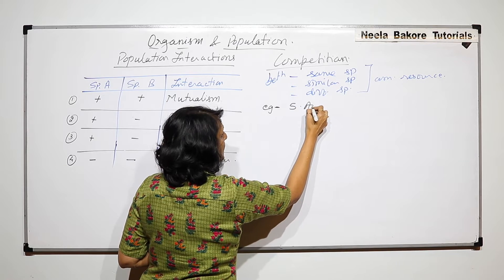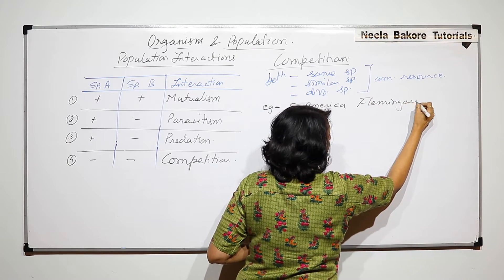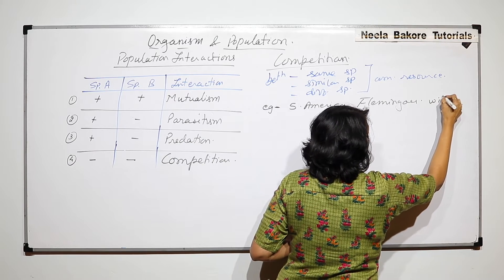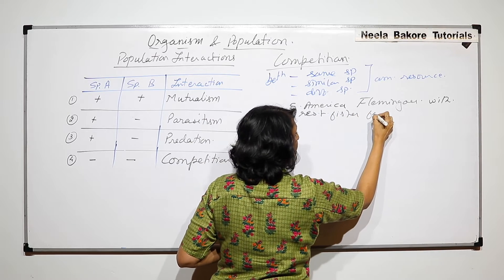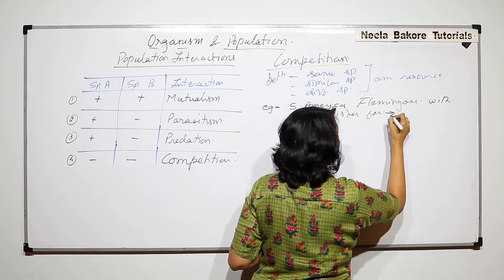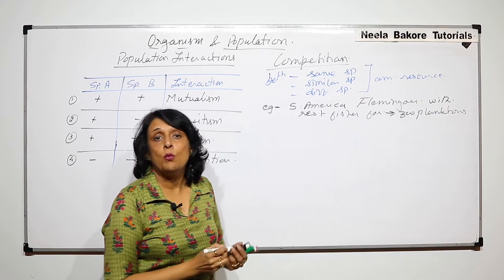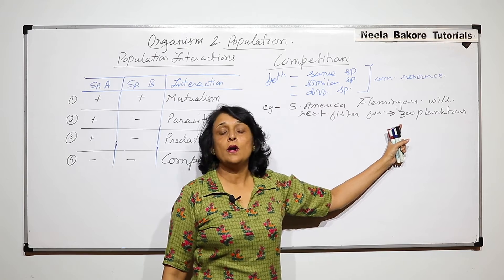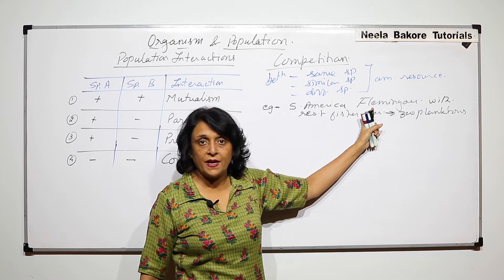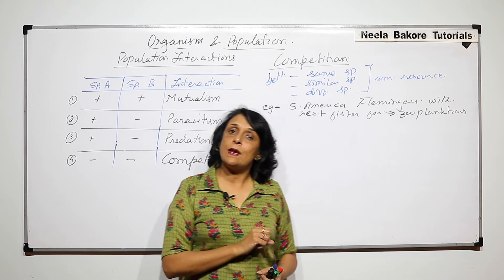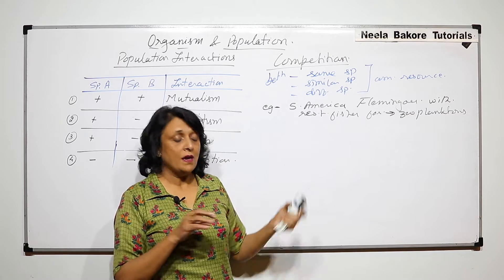In South America, flamingos compete with the resident or local fishes for the common food, and that common food is zooplankton. Zooplanktons present in water are the food for the fishes which live in those water bodies, as well as the migratory birds which come there. Both are targeting the same food item — the resource is the same, but they belong to different species. So here the competition is between different species.